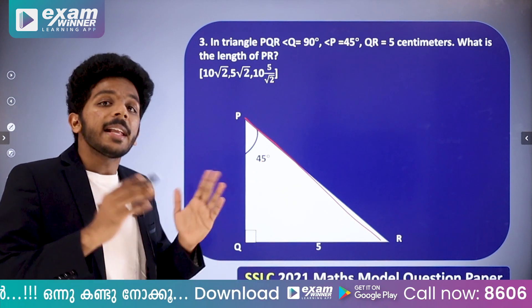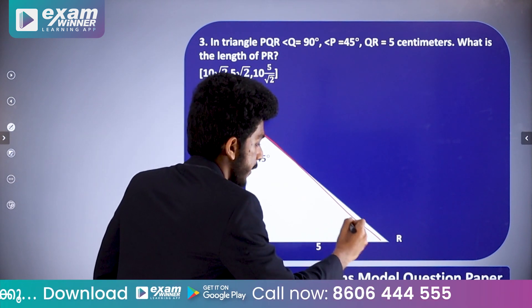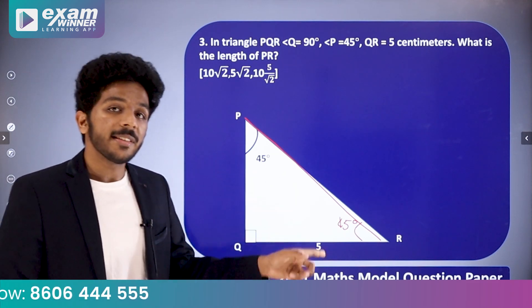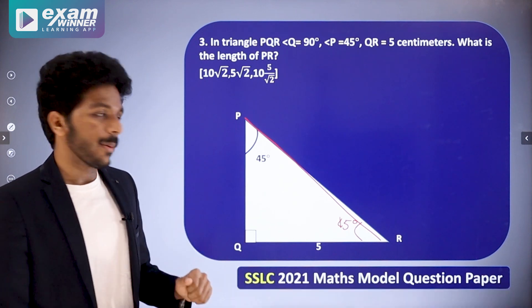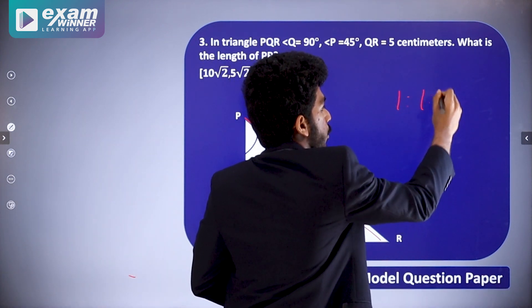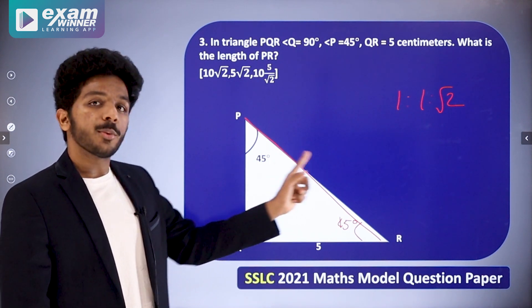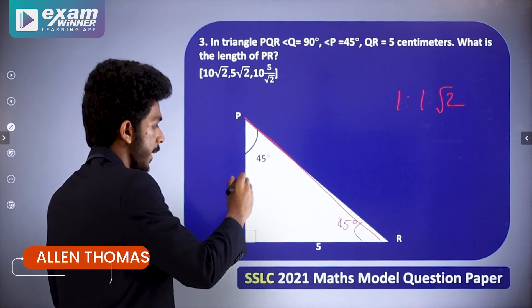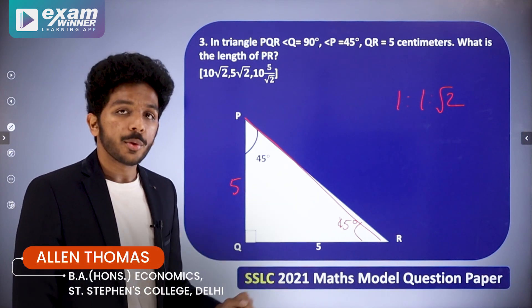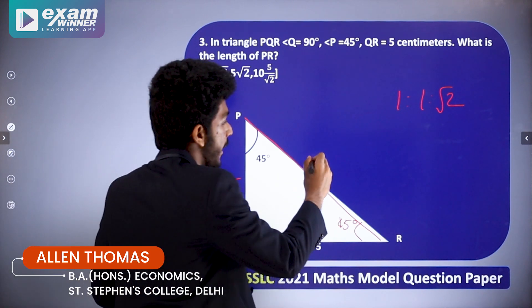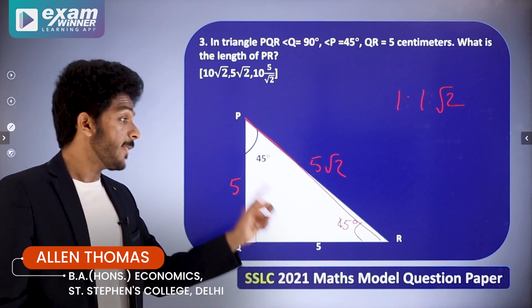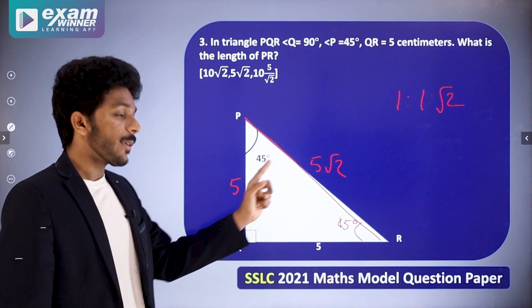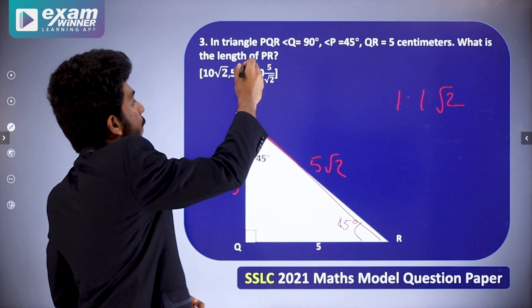Since the triangle has 180 degrees total and angles are 90° and 45°, the remaining angle is also 45°. This is an isosceles right-angle triangle. The side ratio is 1 : 1 : √2. Since the given side QR is 5, each equal side is 5, and PR equals 5√2. The answer is option B: 5√2.